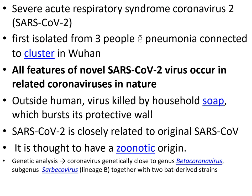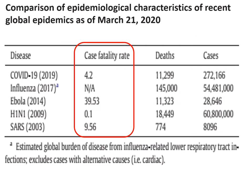Severe acute respiratory syndrome coronavirus 2, or SARS-CoV-2, was first isolated from three people with pneumonia connected to a cluster in Wuhan. All features of the novel SARS-CoV-2 virus occur in related coronaviruses in nature. Outside the human body, the virus is killed by household soap, which bursts its protective wall. It is closely related to the original SARS-CoV and is thought to have a zoonotic origin.